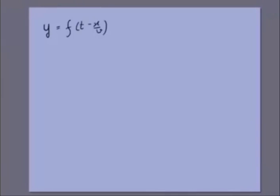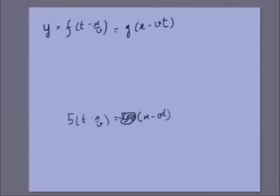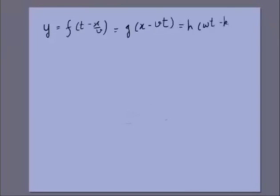The wave function y = f(t − x/v) can be written in several equivalent forms. It can also be written as g(x − vt) — f and g are different functions but both are valid. It is also written as h(ωt − kx), or as i(t/T − x/λ), where different quantities are introduced, some of which we've already seen in simple harmonic motion.